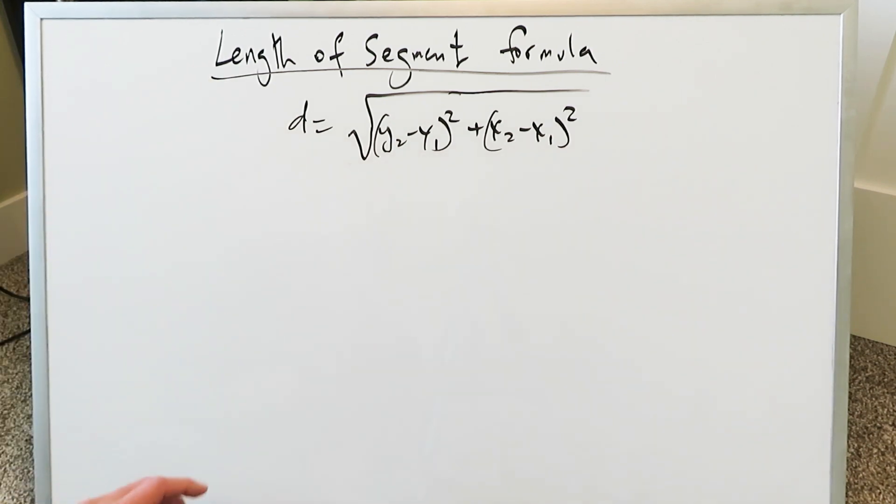Take any two points on an x-y plane. The distance between those two points or the length of that segment is given by this formula and you know it: the square root of y2 minus y1 whole square plus x2 minus x1 whole square.